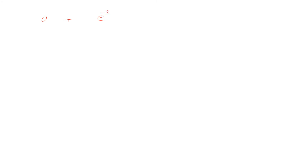The integration of the first function gives zero. The integration of the second function gives e to the power negative st over negative s, evaluated from a to infinity. Applying the limits, we get e raised to the power negative infinity over negative s, minus e raised to the power negative as over negative s.